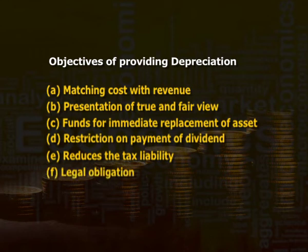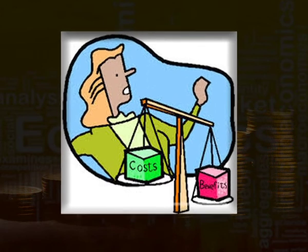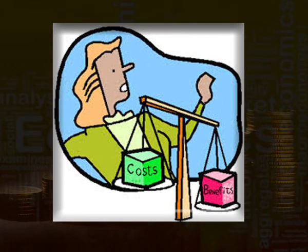Let us discuss the objectives in detail. First is matching cost with revenue. This principle states that the revenue generated in an accounting period is set off against the cost of goods and services which have been consumed for generating that revenue. For ascertaining true income or profit of an accounting period, all expenses including depreciation incurred for earning revenue must be considered for proper cost valuation and determination of income. Depreciation needs to be charged to the profit and loss account, as the loss in value of fixed assets against its use is also an expense like other expenses.